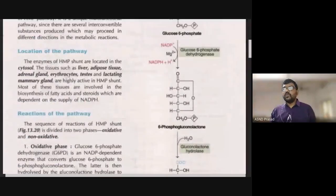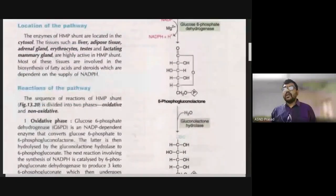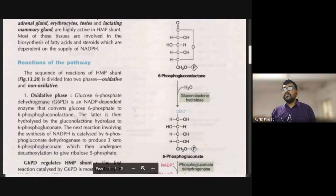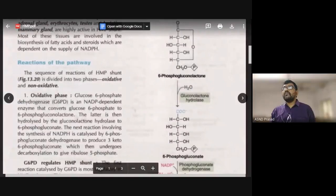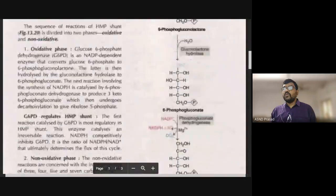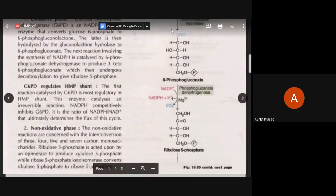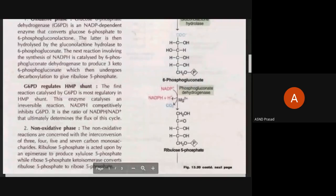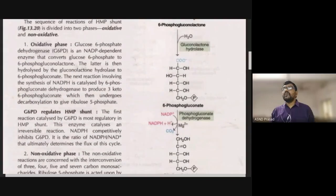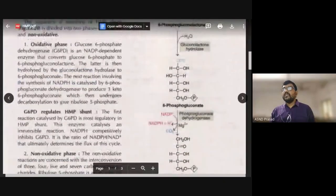By the enzyme dehydrogenase, glucose-6-phosphate is converted to 6-phosphogluconolactone. It is then immediately hydrolyzed to 6-phosphogluconate using a water molecule. Subsequently, 6-phosphogluconate undergoes decarboxylation — the first carbon dioxide is released — and it is converted to ribulose-5-phosphate, with a second NADPH also liberated.